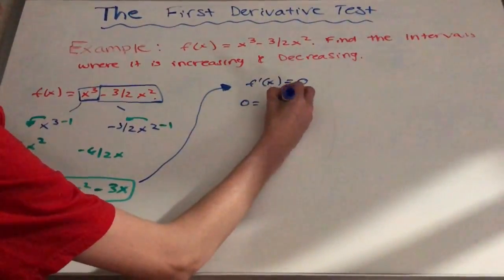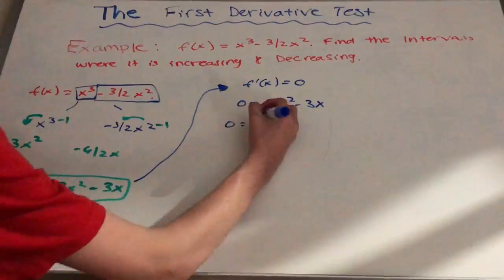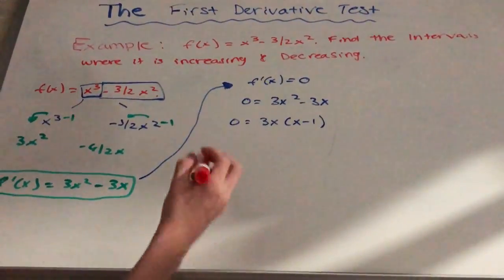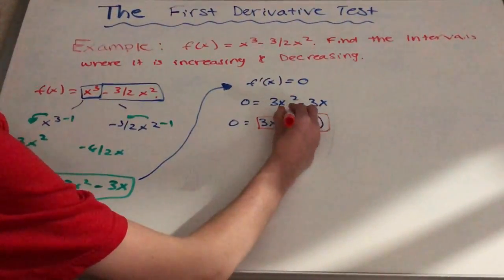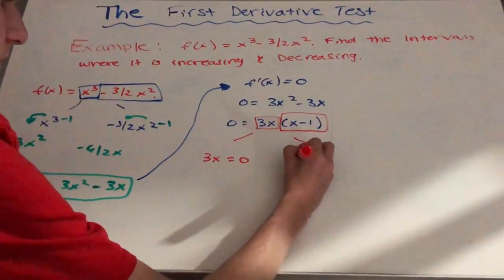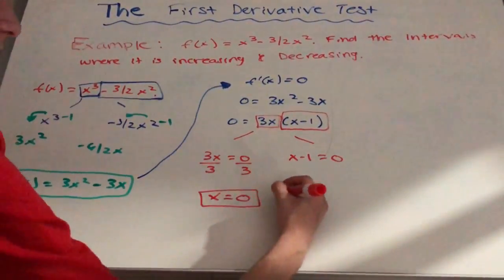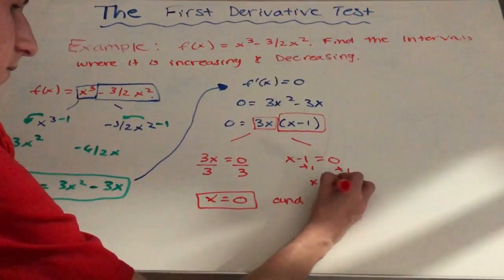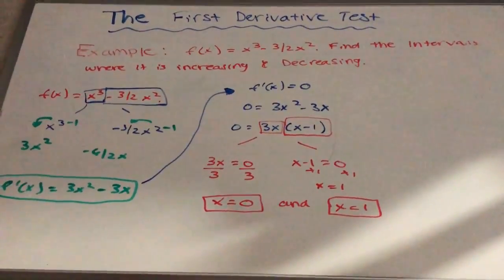Now that we found the derivative of the original function, we have to set that equal to zero. Then we simplify as much as we can. In this example, we set 3x equal to zero and then x - 1 equal to zero. After that, we solve for x for both equations, and those would be the critical points of the original function.